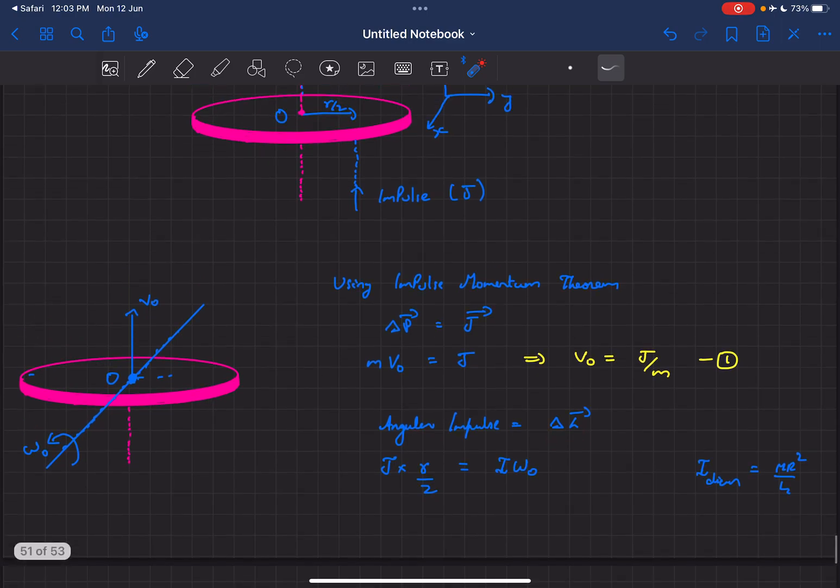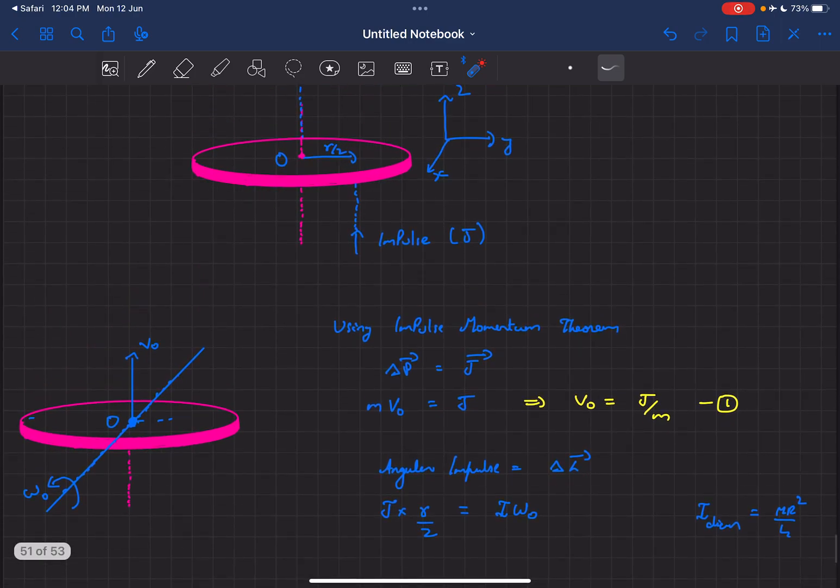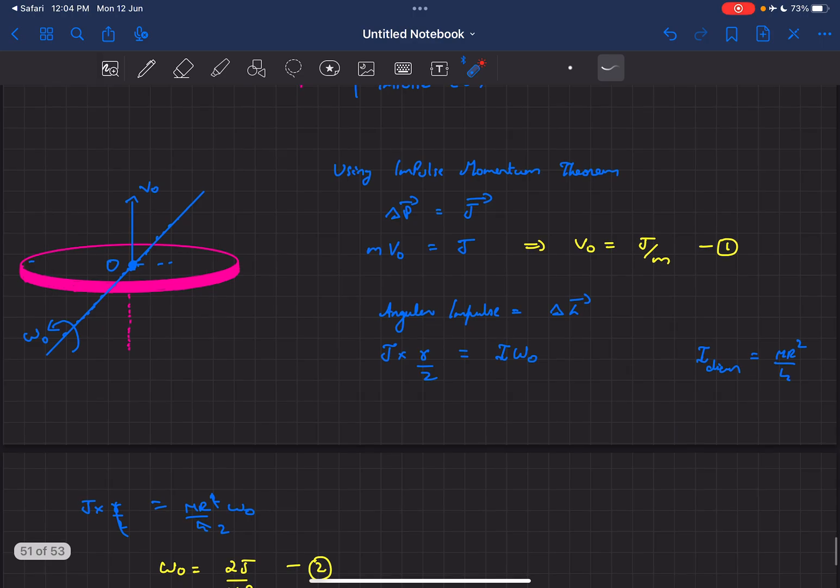The angular impulse is simply the moment of the impulse about the axis of rotation, which in this case would be J times r/2, and that would be equal to the angular momentum of the body, which is I times ω₀.